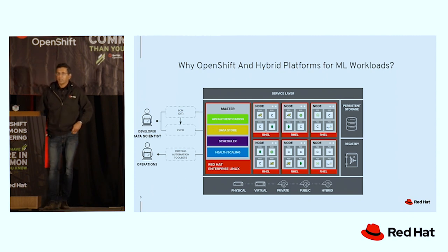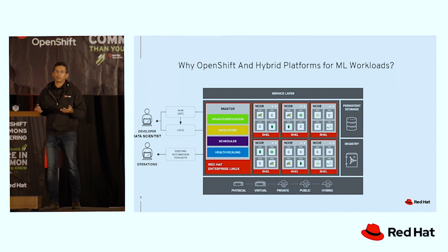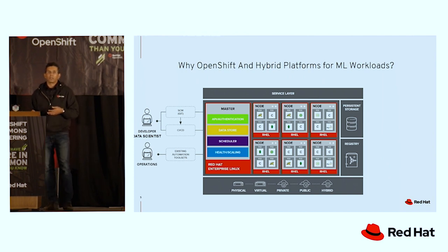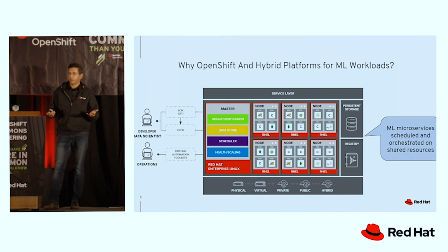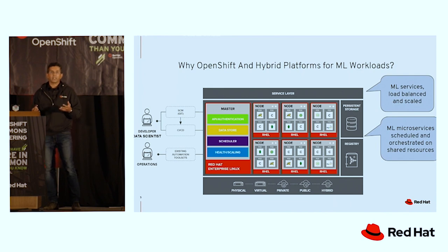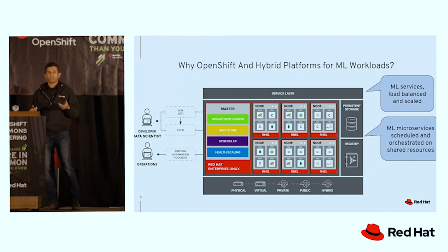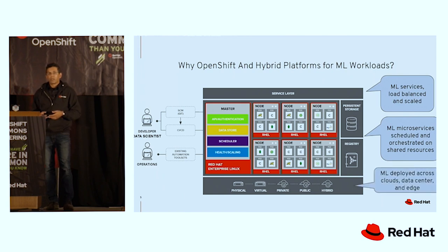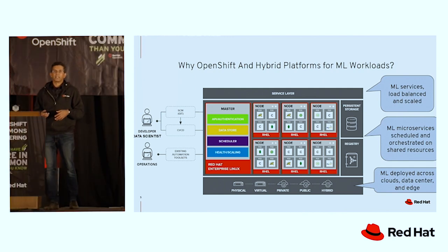ML workloads are highly data and compute intensive, and OpenShift is a distributed platform — so they're a natural fit. Microservices can be orchestrated across shared resources, services can be placed behind load balancers, and they're scalable, meaning you can add resources as needed or shrink them when you don't. With OpenShift, ML workloads can be truly portable, running on your private cloud or on your public cloud.